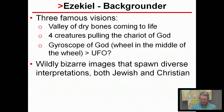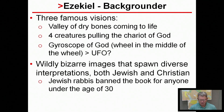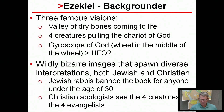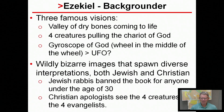These wildly bizarre images spawn diverse interpretations in both Jewish and Christian tradition. The ancient rabbis banned the book for anyone under 30 because of risqué and bizarre scenes. Christian apologists have taken the four creatures pulling God's chariot and said they are symbolic of the four evangelists — so in many old cathedrals, stained glass windows show four creatures representing Matthew, Mark, Luke, and John.